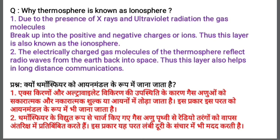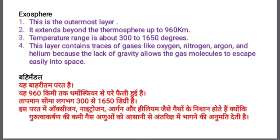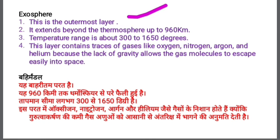This was all about the thermosphere. Moving on to the exosphere: first of all, the exosphere is the outermost layer of the atmosphere. It is the outermost layer where there is no gravitational effect. Due to the lack of gravity, we can launch satellites easily here, and satellites are placed in this layer. As there is no gravity, satellites cannot be pulled back towards the earth, so they can be placed and can perform their functions easily here. The exosphere extends up to 960 kilometers above the thermosphere.